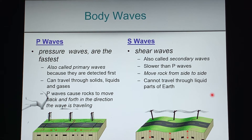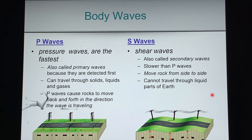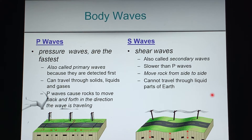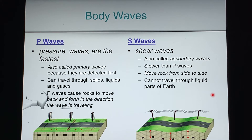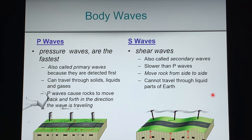P waves, also called pressure waves or primary waves, are detected first — felt first by people or machines. They can travel through all different forms of matter: solids, liquids, and gases. They can travel through water and even through the atmosphere — if you were in a helicopter not too far above the ground, you might feel some extra shaking from these waves. P waves cause the rock to go back and forth in the direction that the wave is traveling.